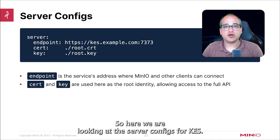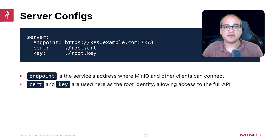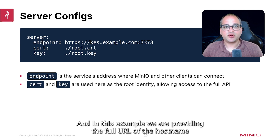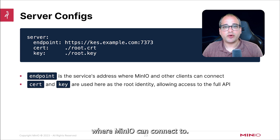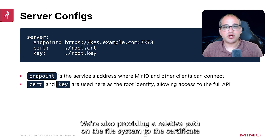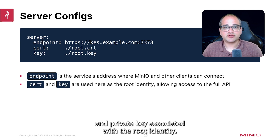Here we are looking at the server configs for KES. In this example, we are providing the full URL of the hostname where MinIO can connect to. We're also providing a relative path on the file system to the certificate and private key associated with the root identity.